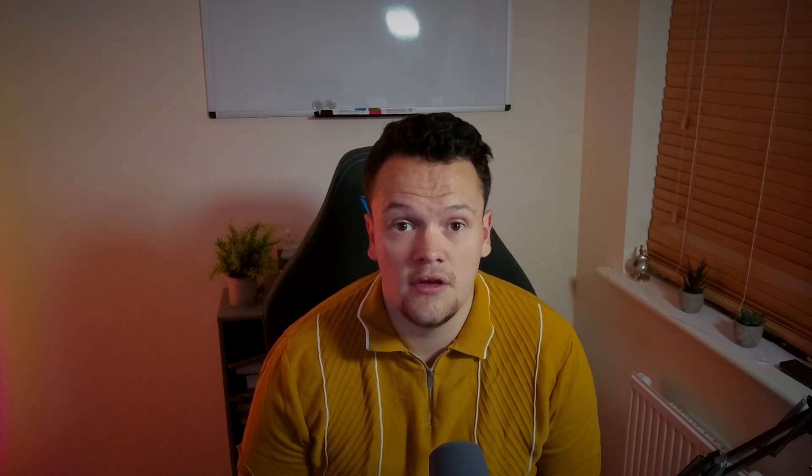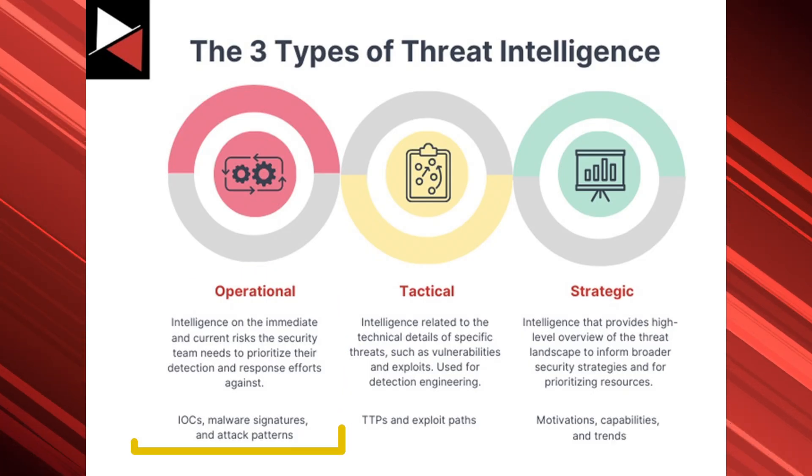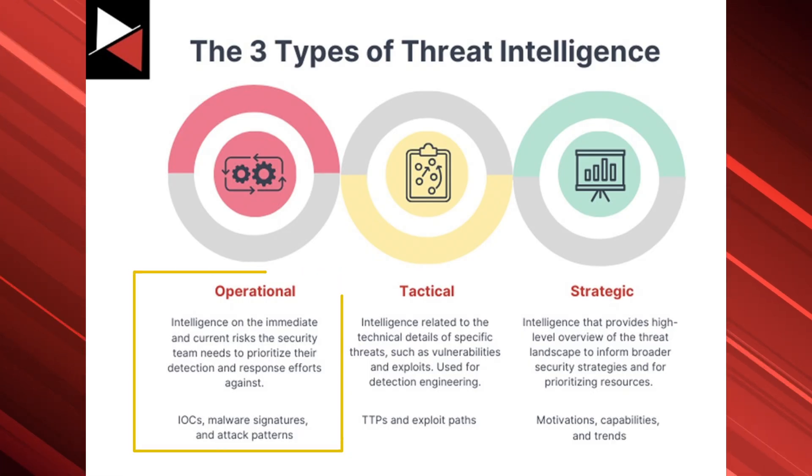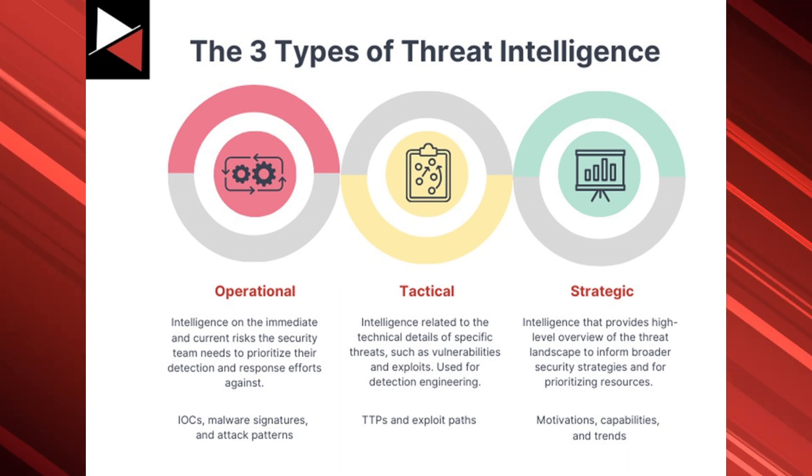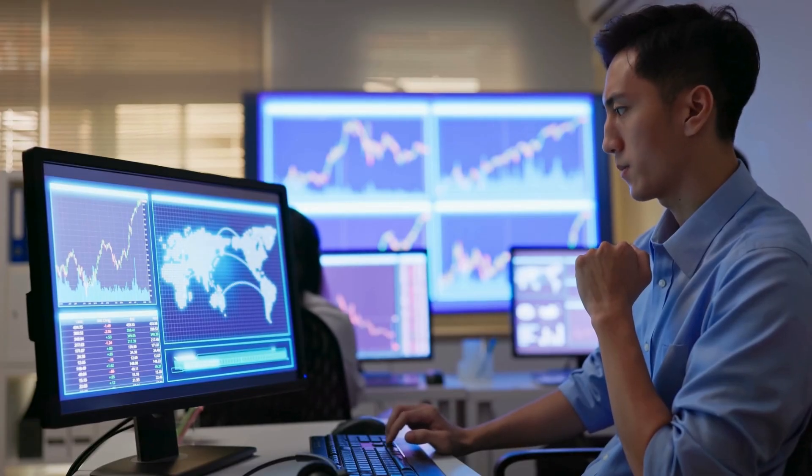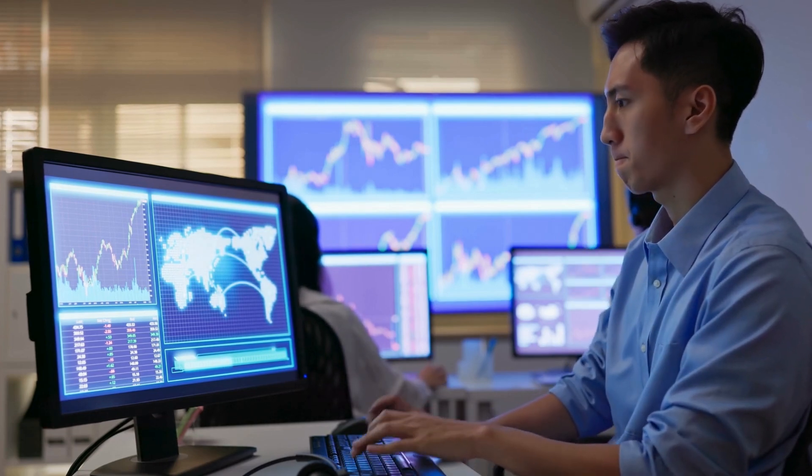Not all threat intelligence is the same. Intelligence about real-time attacks and vulnerabilities differs from intelligence about geopolitical events and emerging threats exploiting technological trends. Threat intelligence comes in three flavors. Operational intelligence focuses on immediate and current risks the security team needs to prioritize in their detection and response efforts. This includes indicators of compromise, malware signatures, and attack patterns, and is used day-to-day by frontline teams like security operations and incident response.